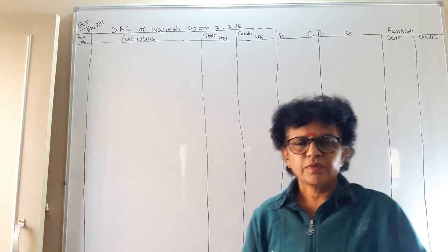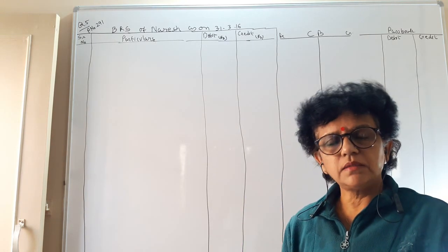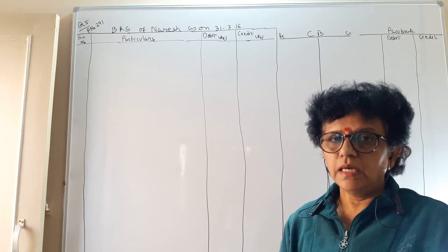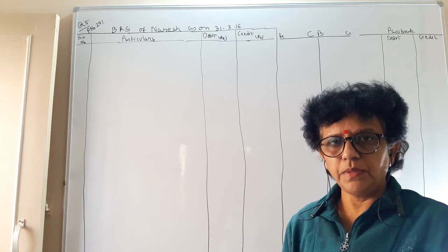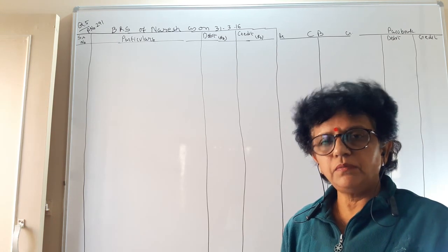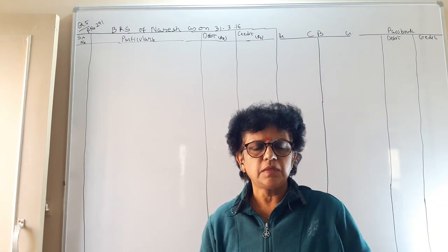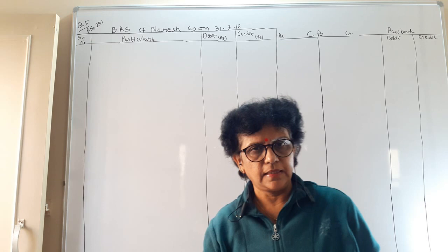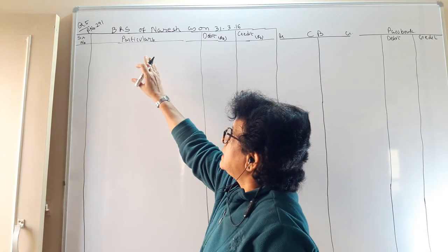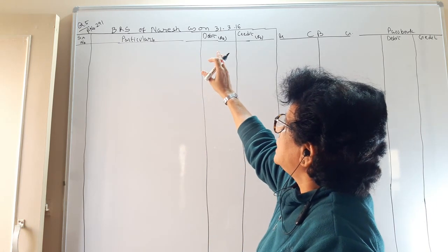Good morning students. Let us continue now with the BRS example. We have understood what bank reconciliation statement is, the reasons, and how BRS is to be prepared. We are going to do all the examples with the debit-credit method because we have learned the double entry system. The format for the question has the title 'Bank Reconciliation Statement' of whatever the party, as on a particular date.